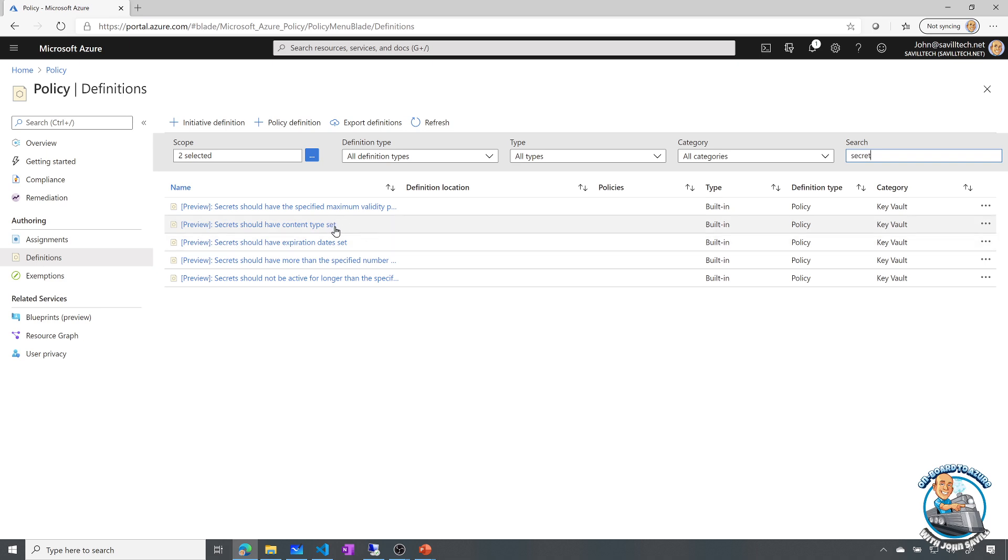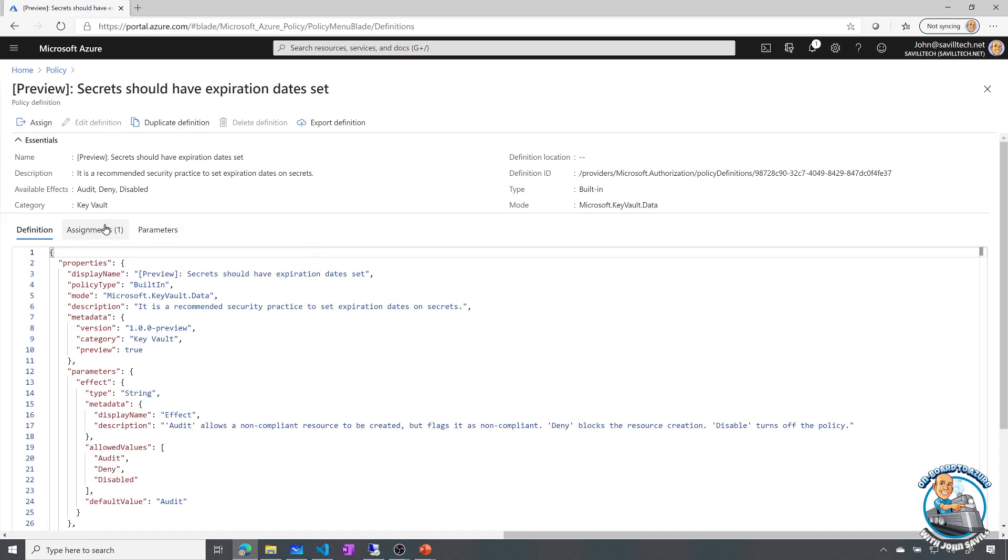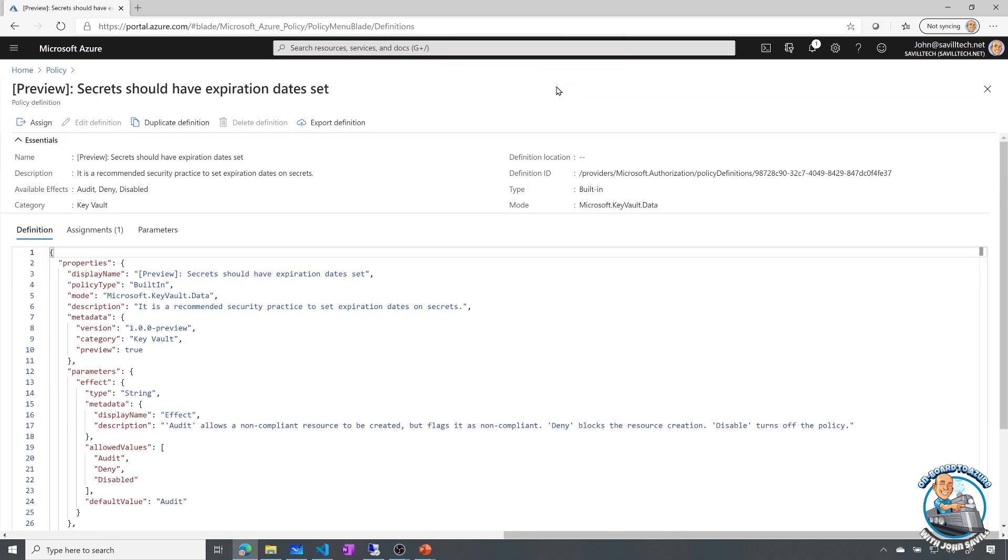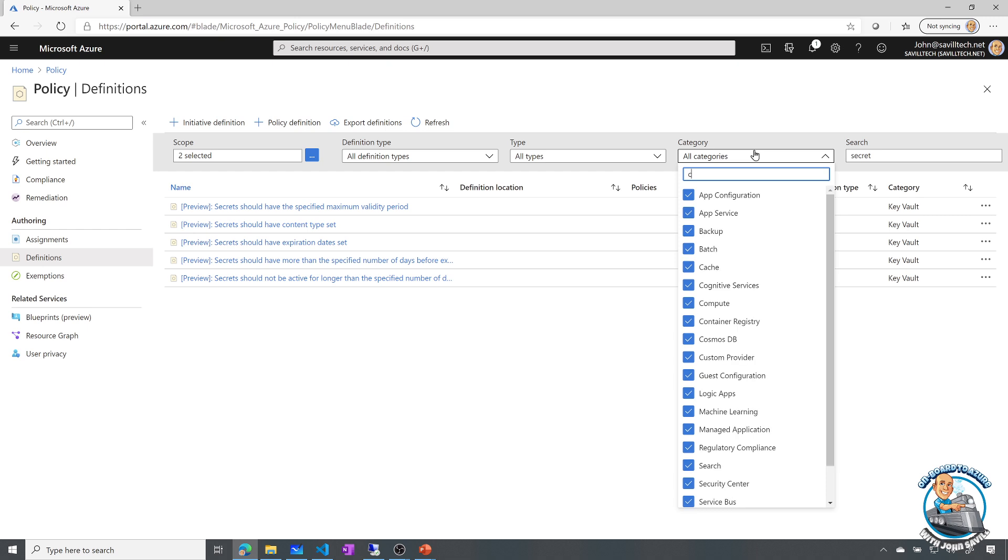So secret should have a content type set. They should have an expiration date. Should have more than a specified number of days before expiry. You have all these options. And when I actually go in, for example, assign one of these, what you'll actually see is I have a parameter of what the effect is. We can see here the default is audit, but I could change it. So I could actually make it a deny as part of the assignment. If I go in here and actually assign it for the parameter, you could see I could actually change it. I could actually stop them being able to actually create that secret that doesn't meet my requirement.